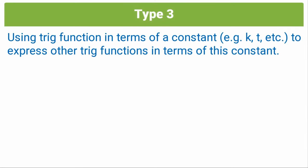In a type 3 trigonometry question, you'll be given a trig function in terms of a constant, which could be a letter of the alphabet such as K, T, or even A, B, C, and you'll be required to express other trig functions in terms of this constant or letter of the alphabet.